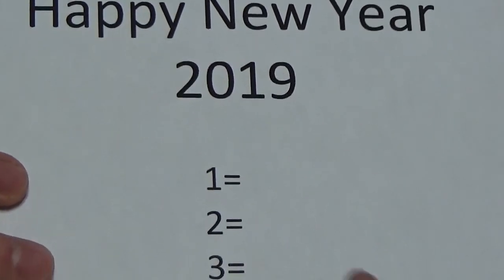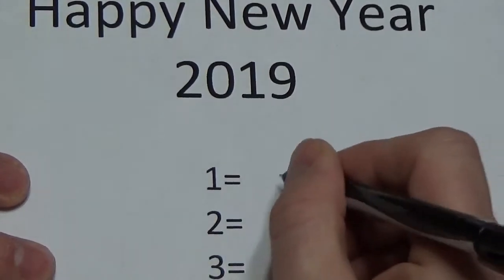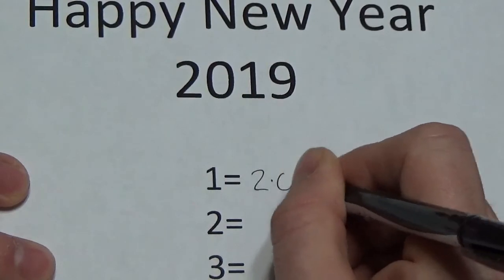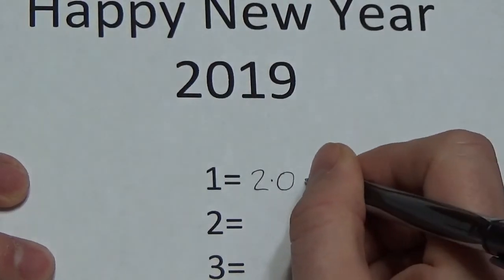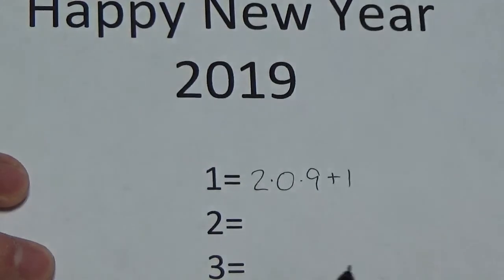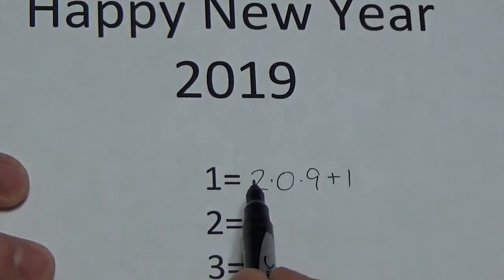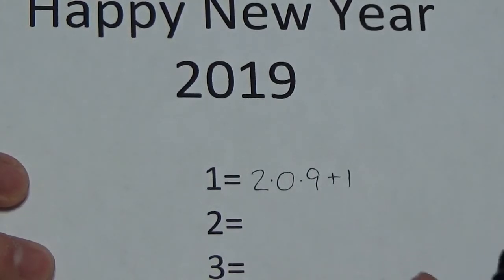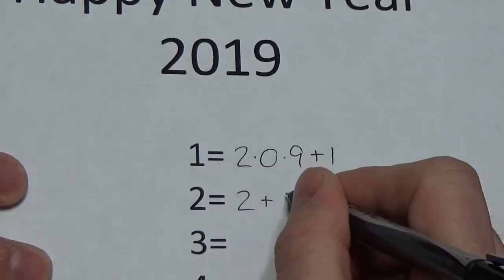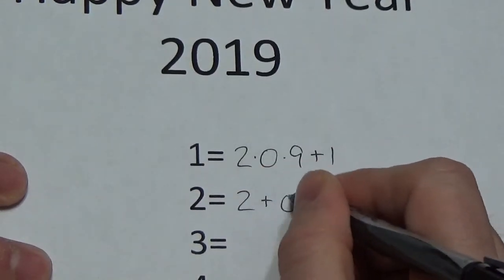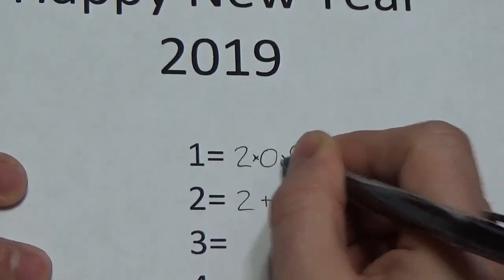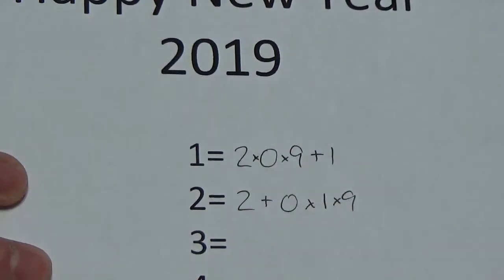So for example, 1 — you could go, well, that would be 2 times 0 times 9 plus 1. Because the product here would be 0 plus 1 is 1. For 2, well, that might be just 2 plus 0 times 1 times 9. Or I suppose I can use the little x's there for that.